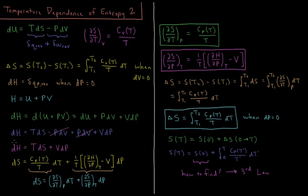If we substitute that in, we know that du equals TdS minus pdV. So now we have dH equals TdS minus pdV plus pdV plus VdP. Notice that there are two terms for pressure times dV — one is negative, one is positive — so those two cancel. So the change in enthalpy during some small perturbation to our system is the temperature times the change in entropy plus the volume times the change in pressure.